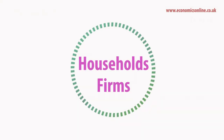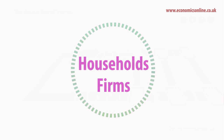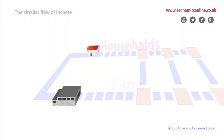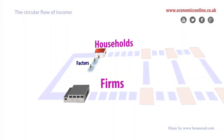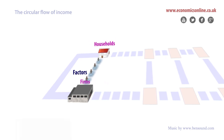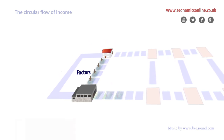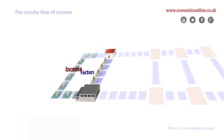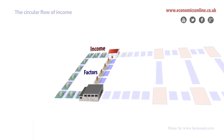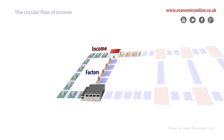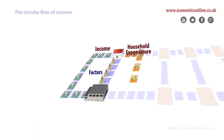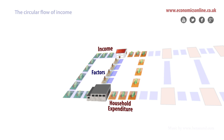The circular flow of income. Income circulates between an economy's two main components, its households and firms. Households supply firms with factors of production. In return, they receive an income. Income is converted into expenditure, which is received by firms as revenue. This spending generates an output of goods and services from firms to households. This is the simple circular flow.